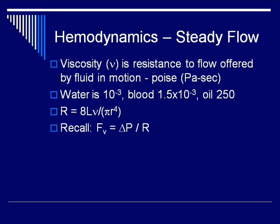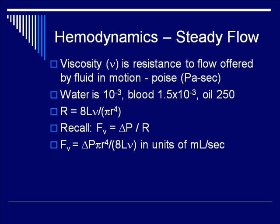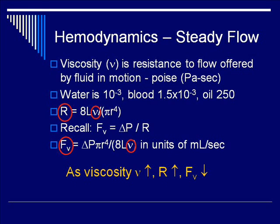Resistance is expressed in the equation as indicated in the slide. The flow rate of volume F(V) is delta P over R. Putting this together, the volume flow rate is equivalent to delta P times a geometric factor divided by another geometric factor. Notice that resistance is proportional to viscosity, whereas the volume flow rate is inversely proportional to viscosity. Therefore, to summarize, as viscosity nu increases, the resistance increases and the volume flow rate decreases. This is all you need to know, and the volume flow rate equation is also known as the Poiseuille equation.